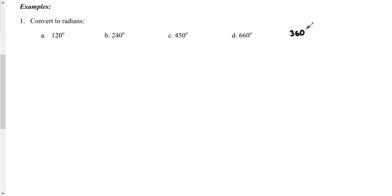Recall that we have 360 degrees in a circle, and we have two pi radians in a circle. So those two would be equivalent. And that also means that 180 degrees is equal to pi, or pi radians.